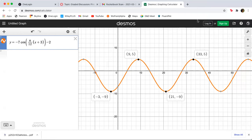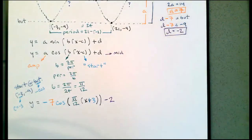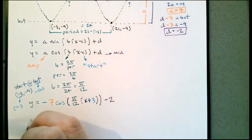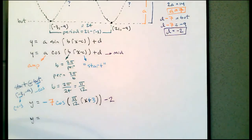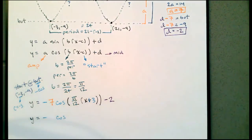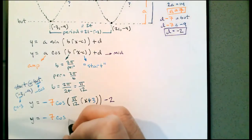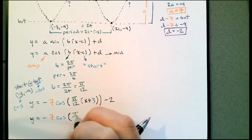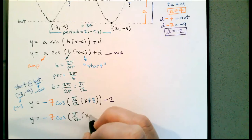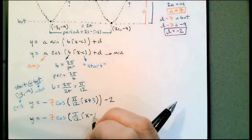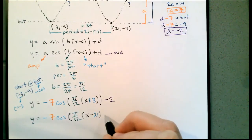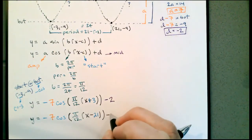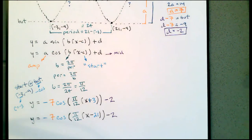But there are other equations that work. We can start at the other bottom point, 21, negative 9. That's still a bottom, so it's still a negative cosine. The amplitude is still 7, the period is still 24, but now we say x minus 21 because C is 21, and the middle is still negative 2. We're just shifting horizontally to consider a different place to be the start.